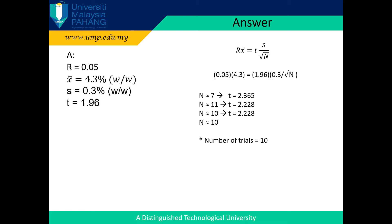After that, find the value of T at the 95% confidence interval in the T-table when N is 7. You will find T equal to 2.365. Again, using the same equation, change the value of T — then you will get N equal to 11. The same step should be applied until the value of N doesn't change. Here, we get N equal to 10 for two times. Thus, the number of trials is 10.